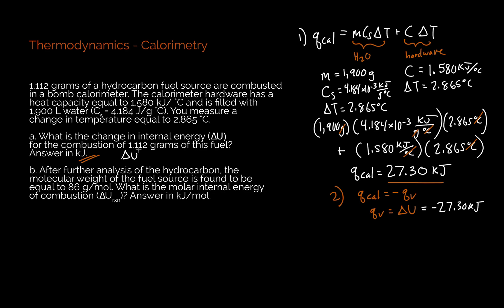So I put negative 27.30 kilojoules. Delta U for the 1.112 grams, for this process, is equal to negative 27.30 kilojoules.